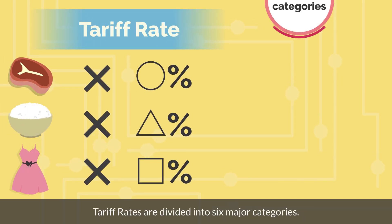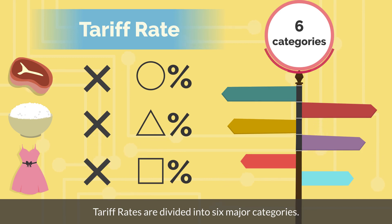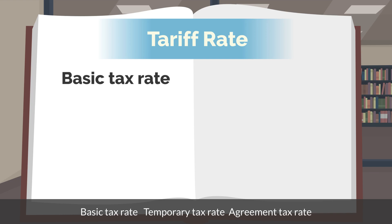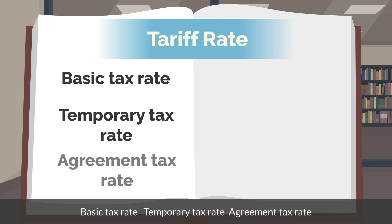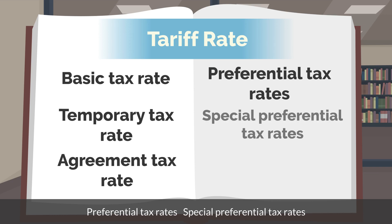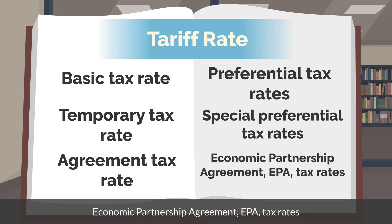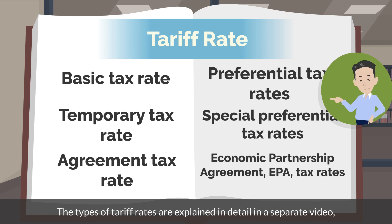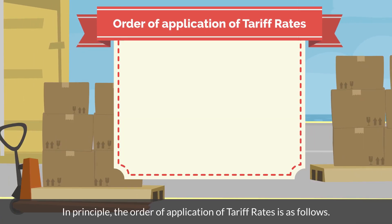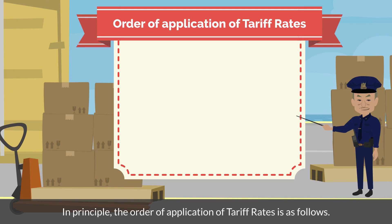Tariff rates are divided into six major categories. The types of tariff rates are explained in detail in a separate video, which is linked in the overview section. In principle, the order of application of tariff rates is as follows.